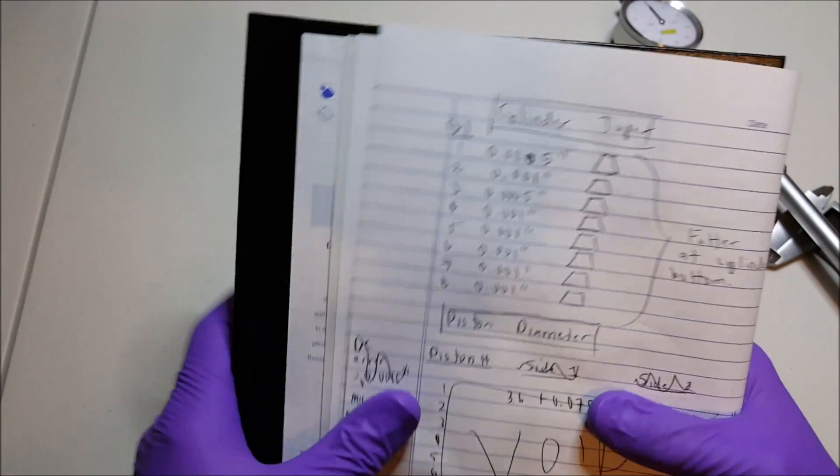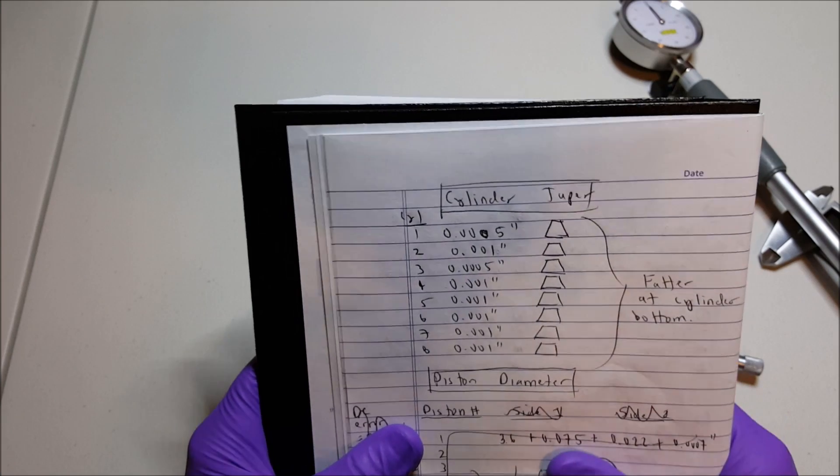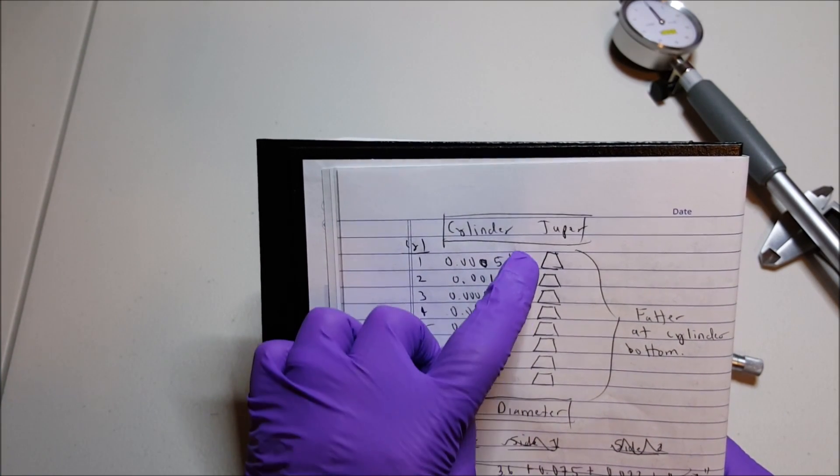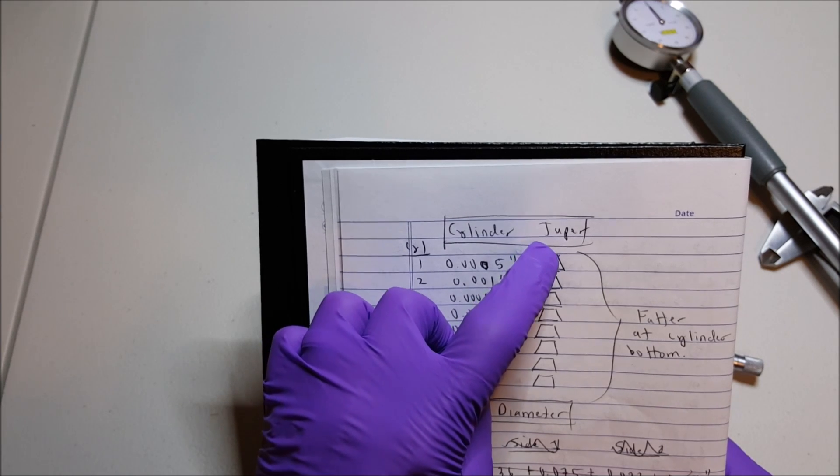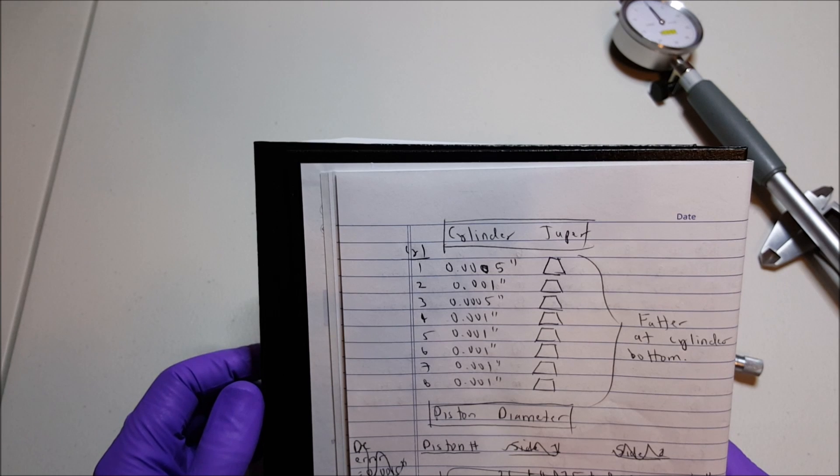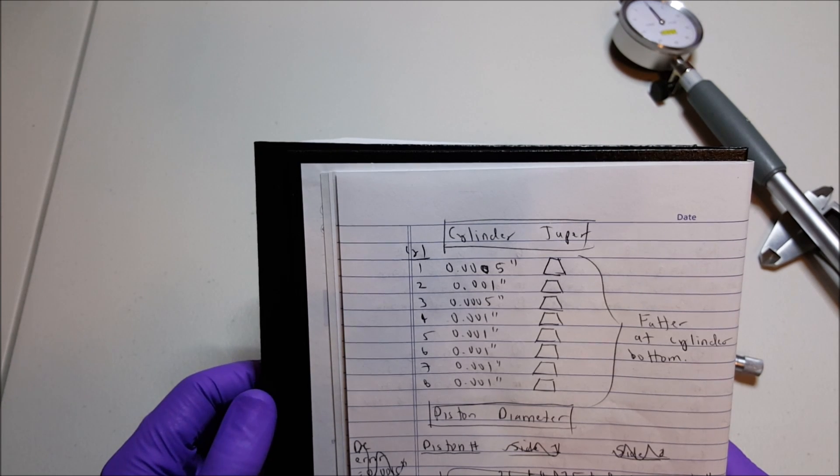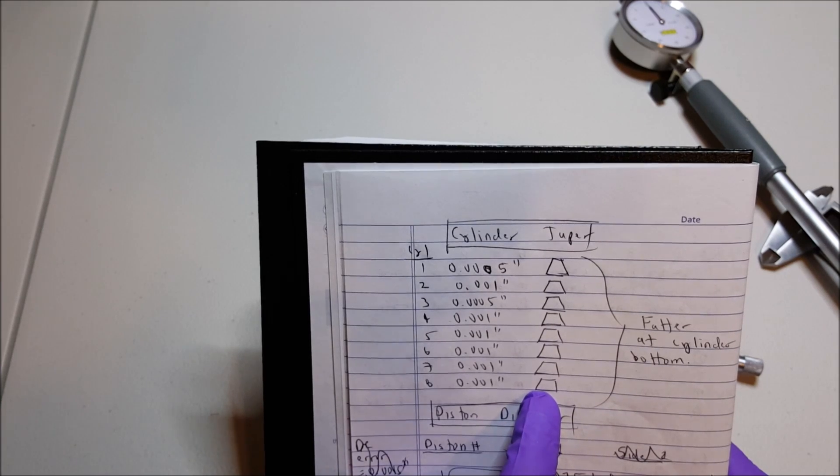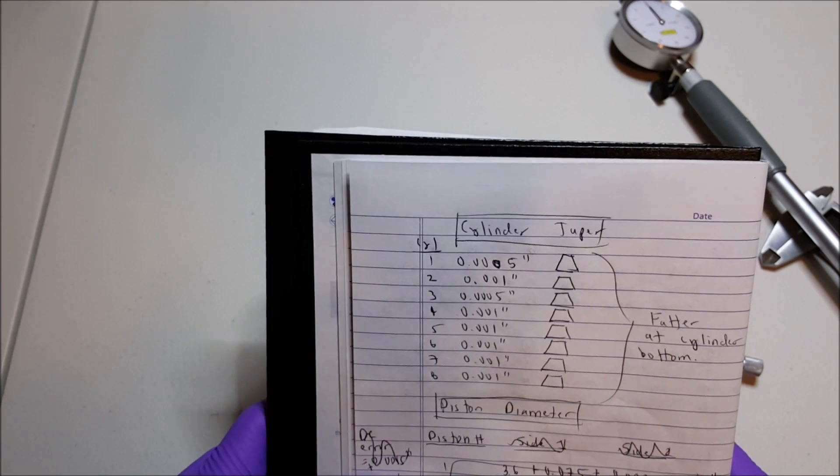And cylinder taper. Like I said before, the top has a smaller diameter than the bottom. The worst case taper is about a thousandth of an inch. So we're getting a thousandth of an inch larger diameter at the bottom than we are at the top. Which isn't bad.